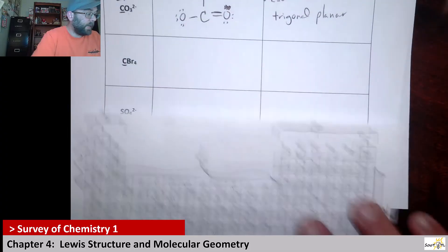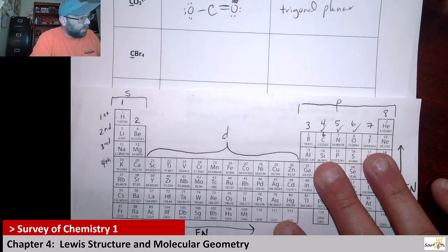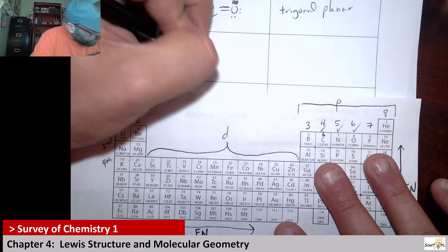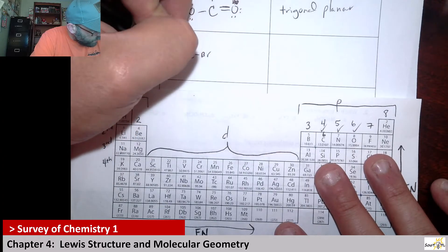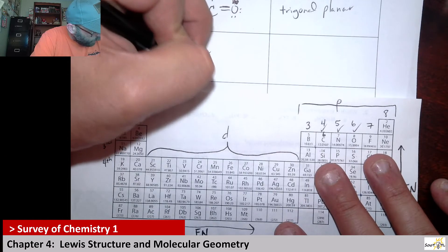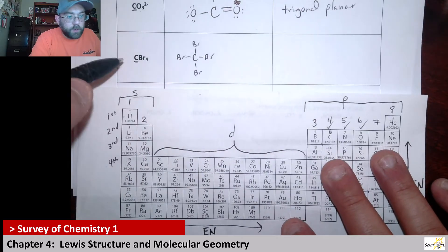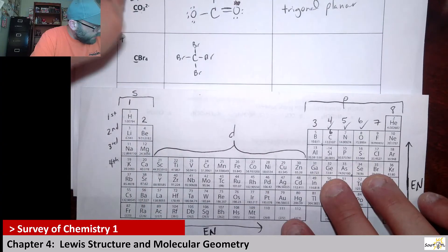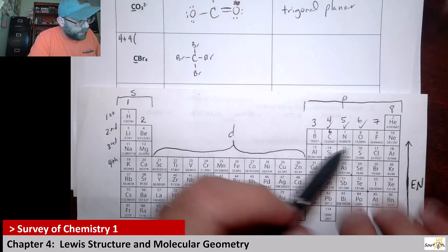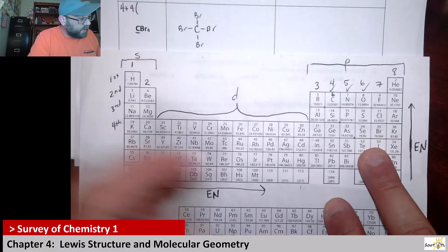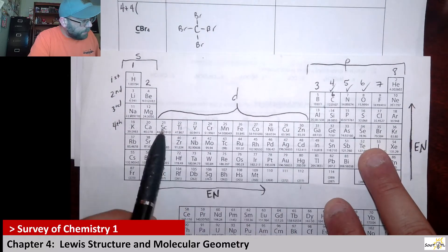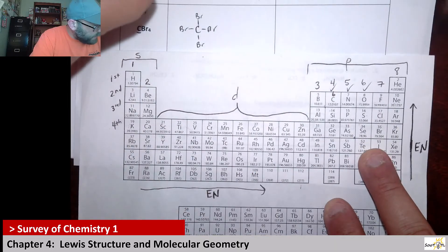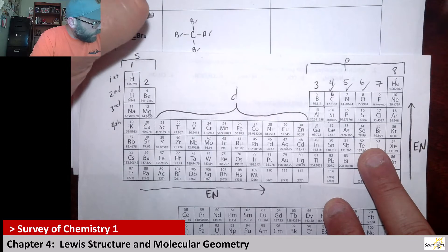Next up we have CBr4. That would be a carbon with four bromines on it. When we count up our valence electrons, carbon has four, and then we have four bromines. For bromine, we skip the D block, so it has seven valence electrons. So it's four times seven — that's twenty-eight — plus four gives us thirty-two total.